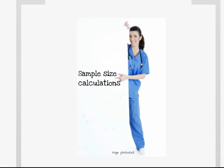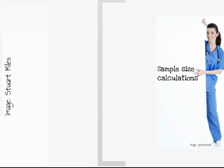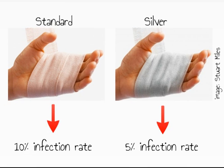This is a quick introduction to sample size calculations. Before conducting a study, we need to know how many people to approach. For example, we might be running a randomised control trial of standard dressings versus silver coated dressings. How many patients do we need to randomise in order to detect a halving in infection rates?